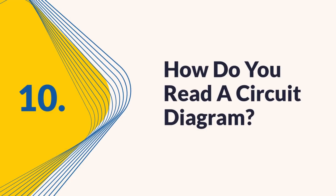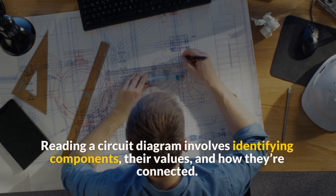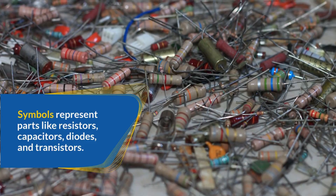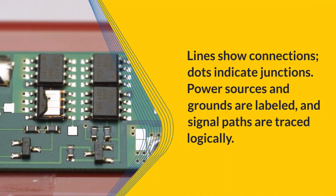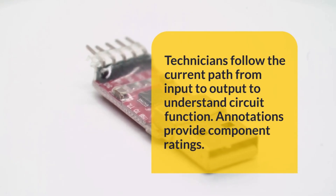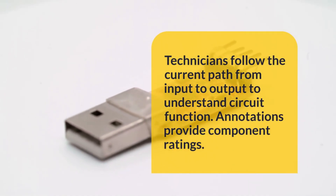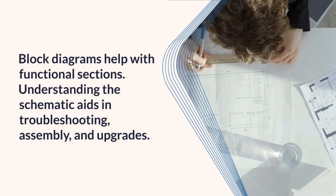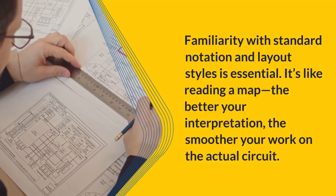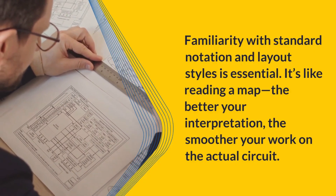Question 10: How do you read a circuit diagram? Reading a circuit diagram involves identifying components, their values, and how they're connected. Symbols represent parts like resistors, capacitors, diodes, and transistors. Lines show connections; dots indicate junctions. Power sources and grounds are labeled, and signal paths are traced logically. Technicians follow the current path from input to output to understand circuit function. Annotations provide component ratings. Block diagrams help with functional sections. Understanding the schematic aids in troubleshooting, assembly, and upgrades. Familiarity with standard notation and layout styles is essential. It's like reading a map — the better your interpretation, the smoother your work on the actual circuit.